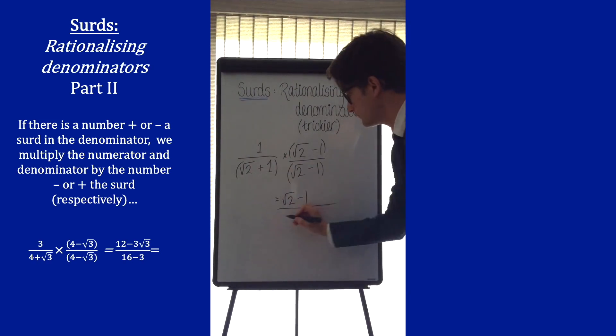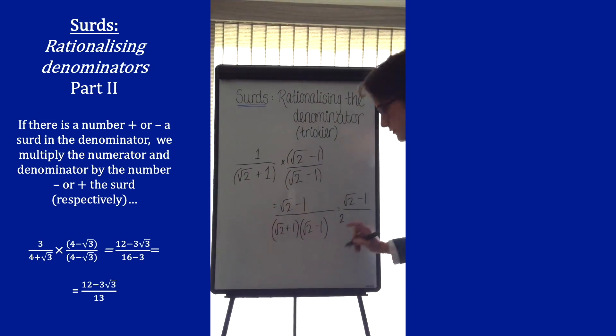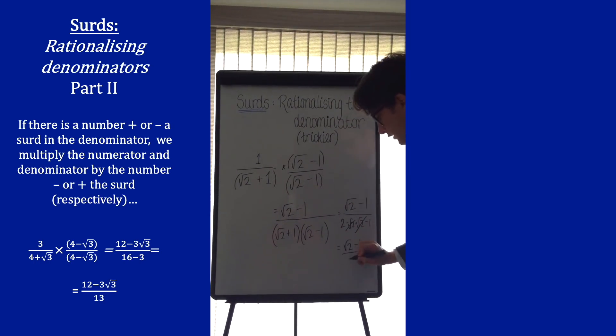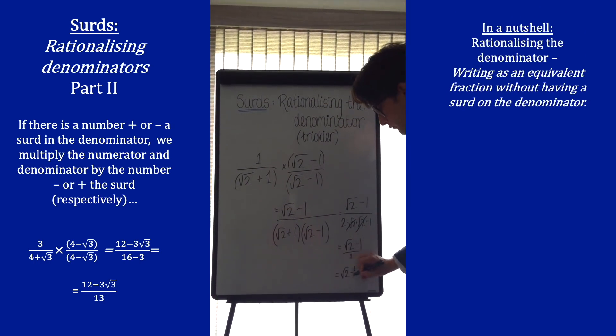And now expanding this double bracket. Here, root 2 times root 2, root 2 times minus 1, root 2 times plus 1, and 1 times minus 1. This cancels with this, and so we're left with 2 minus 1, which is root 2 minus 1 over 1, which is root 2 minus 1.